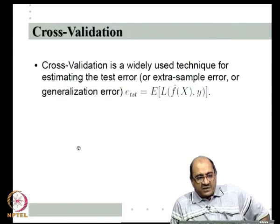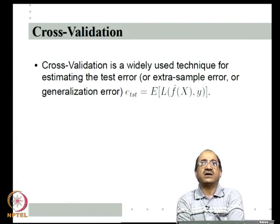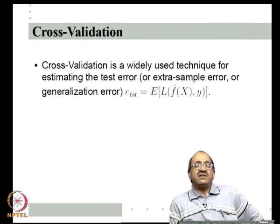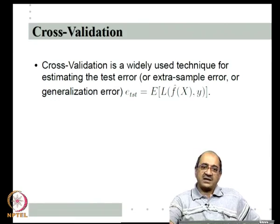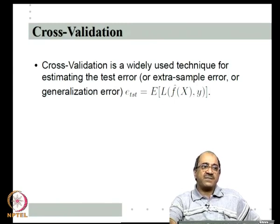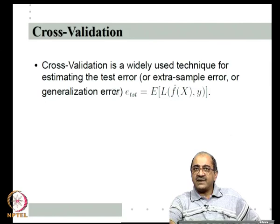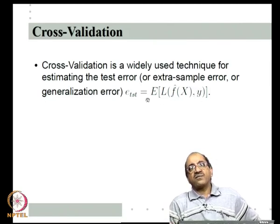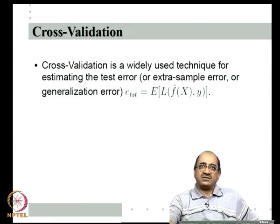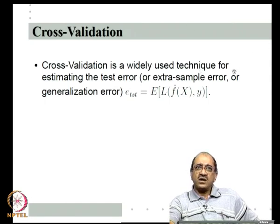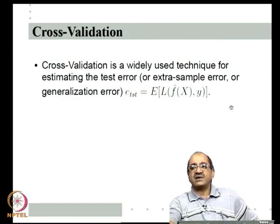So we need statistical, empirical techniques that allow us to estimate the true risk using some of the training data. We will start with one of the most popularly used techniques: cross-validation. Cross-validation is a very widely used statistical technique for estimating test error, also called generalization error or extra-sample error. The idea is to estimate the true risk without separately setting aside data for testing.